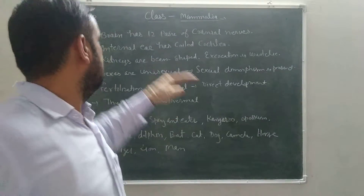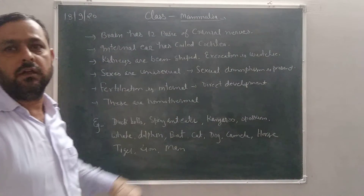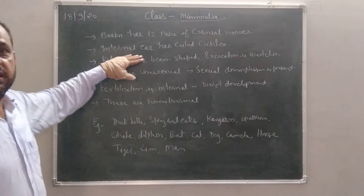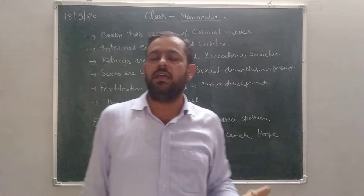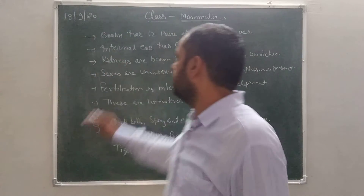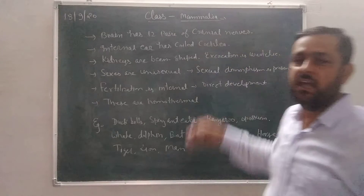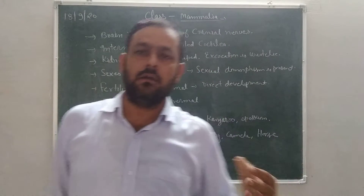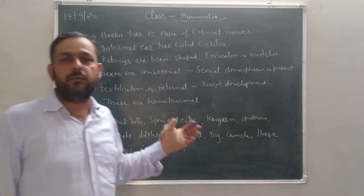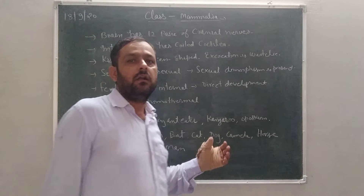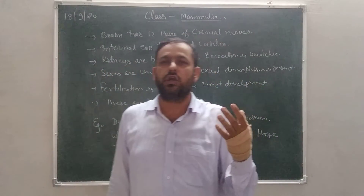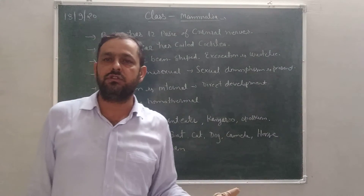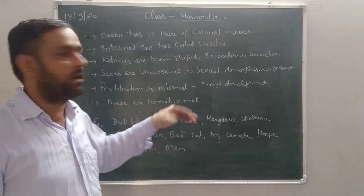The brain has 12 pairs of cranial nerves. The ear is divided into three parts: external ear, middle ear, and internal ear. The internal ear has a coiled cochlea — in reptilia the cochlea is present but not coiled, whereas in Mammalia it is coiled. The sensory organ of the ear is the organ of Corti. The middle ear is made up of three bones: stapes, incus, and malleus.